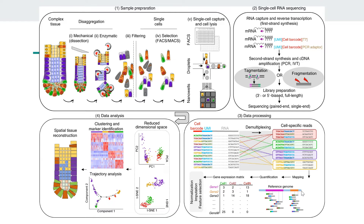This process — from raw data to count data — is done by the Cell Ranger tool. Once we have the count data, in the next step we use any downstream tool like Seurat for data analysis. In this video we will mainly focus on how Cell Ranger works, going through each step in detail.